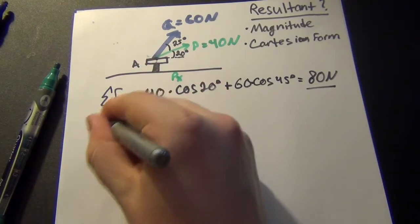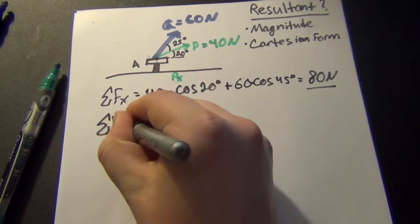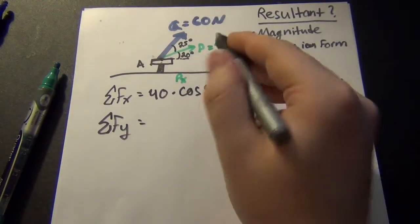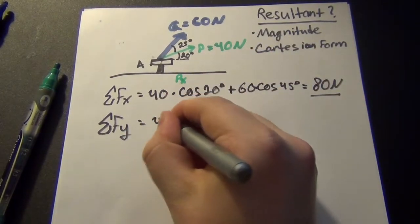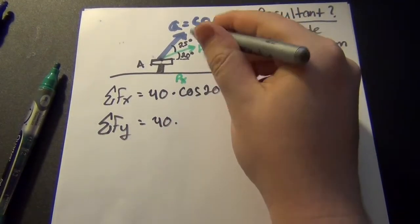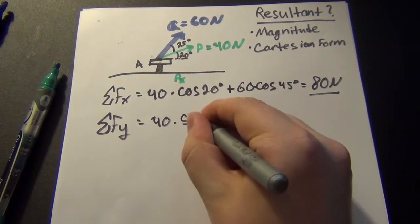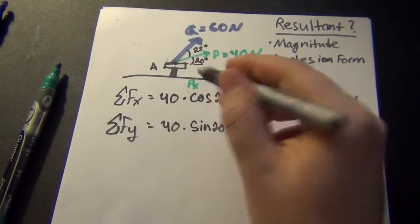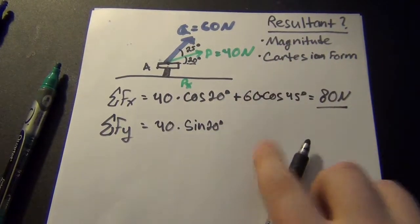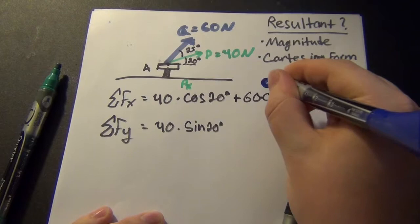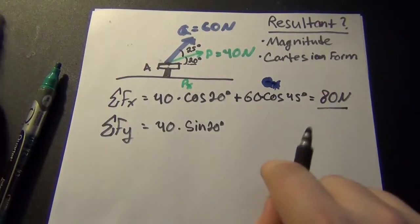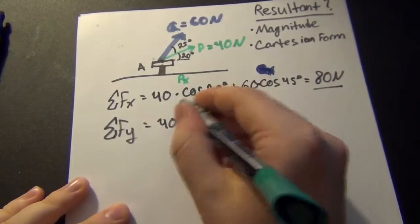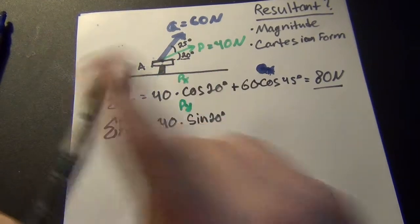Now we just do the same thing for the Y. So again we'll start with P, so we're just going to have 40 Newtons, and this time we want the vertical direction. So we're going to take the sine of 20 degrees, and so that's the Y component of P. And let me go back and make sure I have everything nice and, sorry this marker is a little bad.